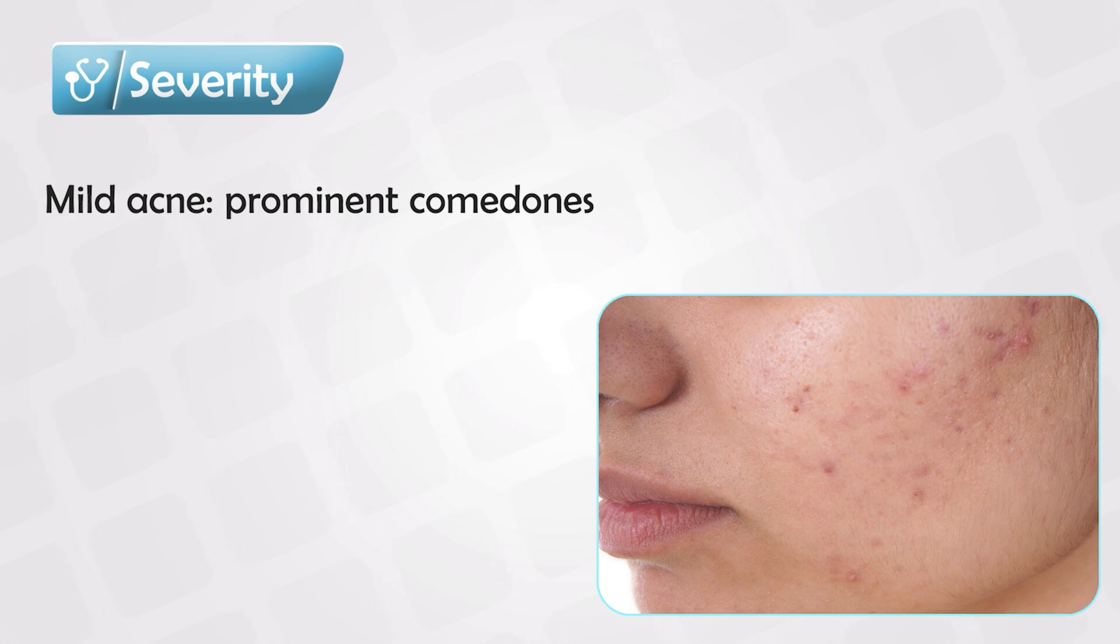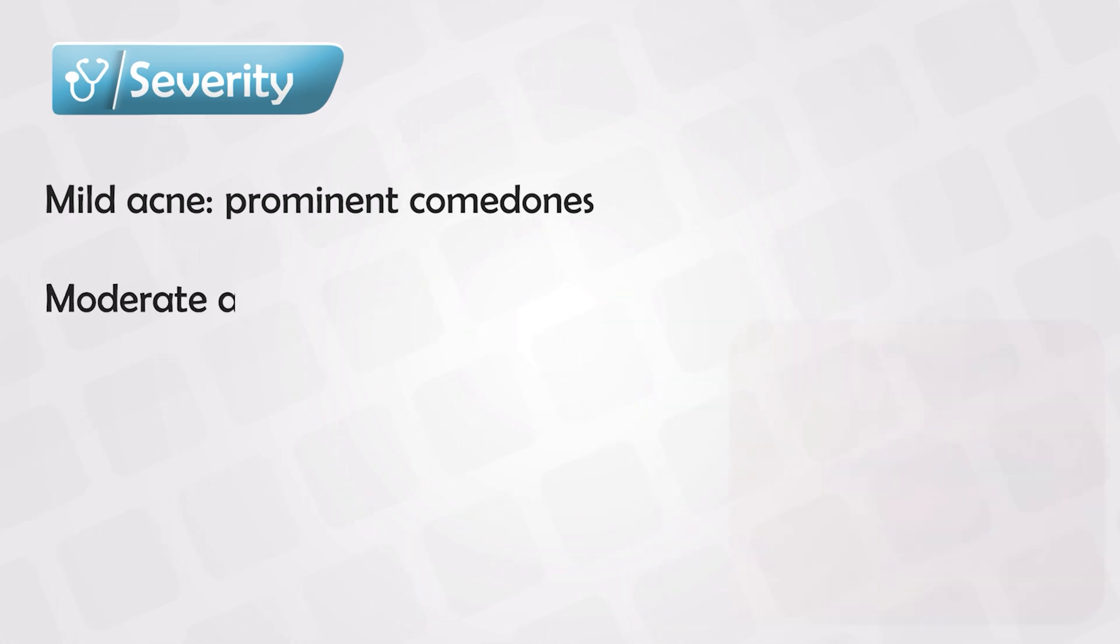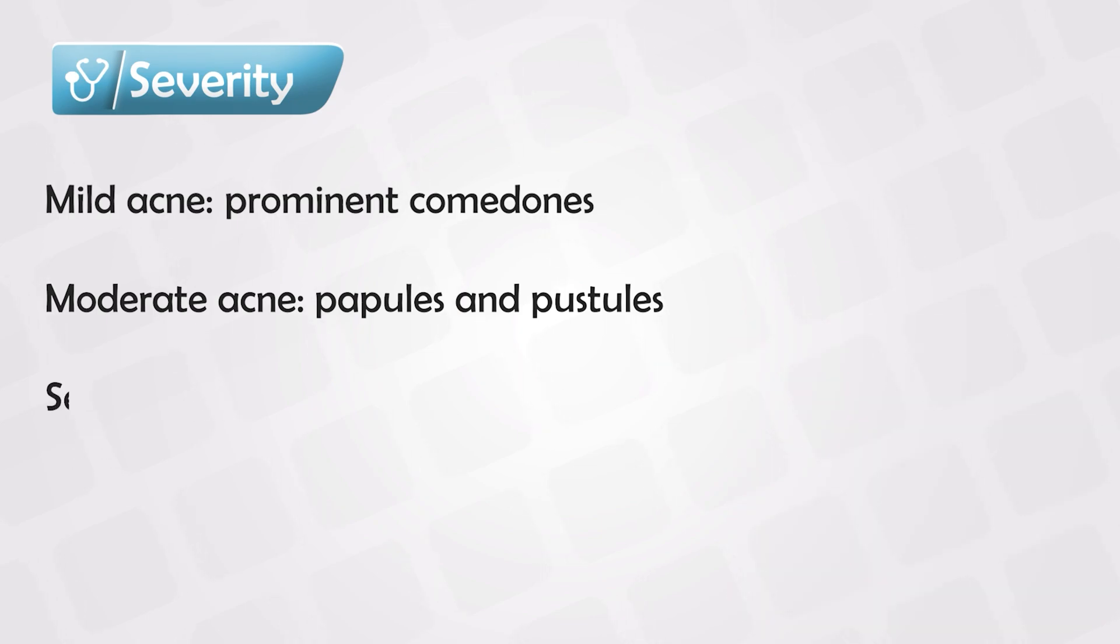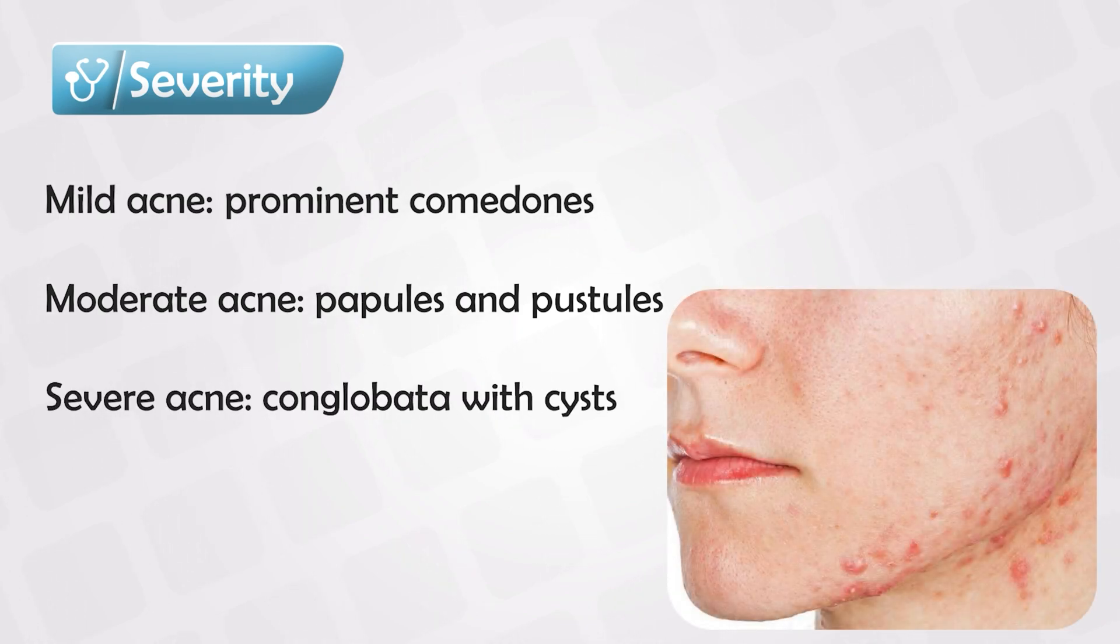The severity of acne is divided into mild acne, which is mostly comedones that are prominent; moderate acne, which is mostly pustules and papules, and these heal without causing any scars; and severe acne, which we call conglobata, and this is mostly cysts, and they cause severe scarring.